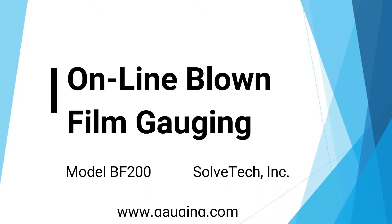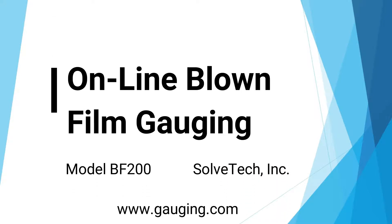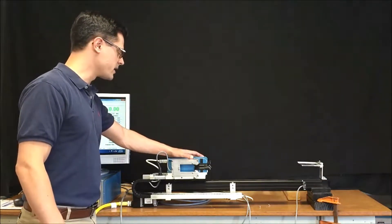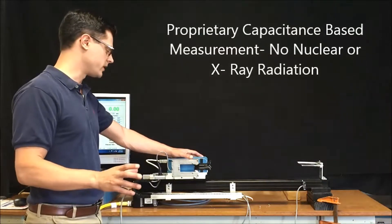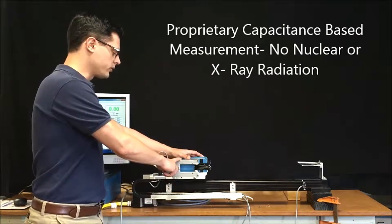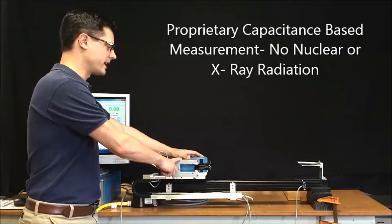This is Rob Lawrence from SolvTech and I'm here to introduce you to the BF200 online blown film gauging system. We have a capacitance-based measurement head that's proprietary to SolvTech and we also have a proprietary ultrasonic edge detector.